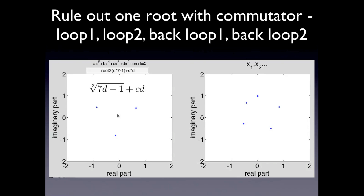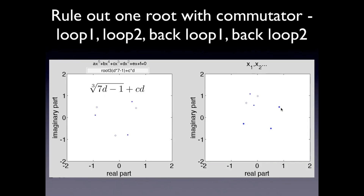Going back to the example shown, you can see that each of the results at the end of the commutator sequence returns to itself. On the other hand, if you look at one of the actual solutions, you can see that it started here and ended here — so at the end of the sequence it did not return to itself. This shows that we can rule out any simple expression with one root.